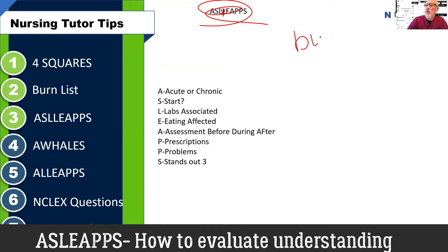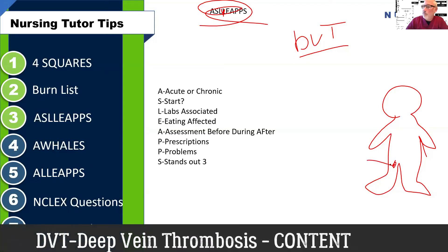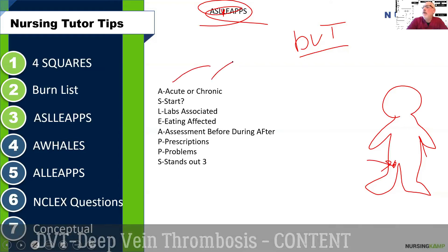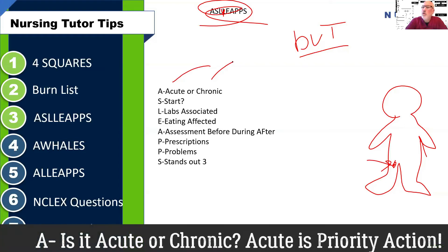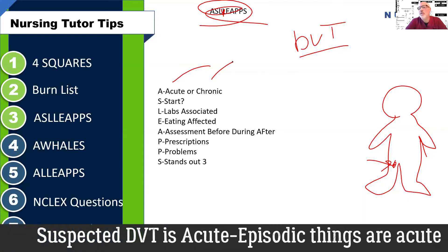Let's walk through a DVT as an example. A DVT is basically a clot in the calf. The first step in ASleeps is asking: is a DVT acute or chronic? Would you call the doctor if a patient had a DVT? Yes. If it's a new onset DVT, you'd call the doctor right away — that makes it acute. A DVT is episodic, so it's not something a patient lives with long-term. That's the first step of critical thinking — if you can't define whether it's acute or chronic, you don't truly know it.